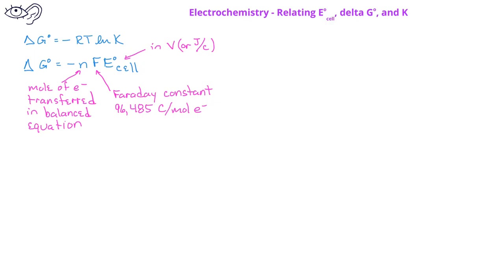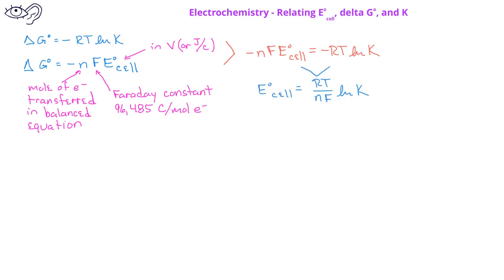Since both equations are equal to the standard free energy change, we can set these equations equal to each other and get a relationship between the standard cell potential and the equilibrium constant. So we have minus nF multiplied by the standard cell potential equals minus RT times the natural log of the equilibrium constant. We can rearrange this to isolate the standard cell potential and get E°cell equals RT divided by nF multiplied by the natural log of K.